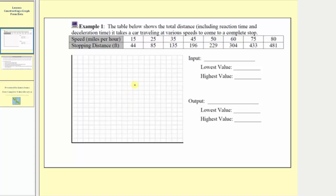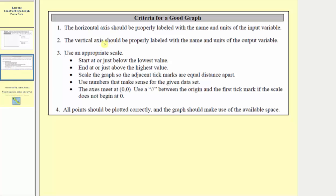Before we set up our graph, let's look at some criteria for a good graph. Number one, the horizontal axis should be properly labeled with the name and units of the input variable. Two, the vertical axis should be properly labeled with the name and units of the output variable. Step three, we want to use an appropriate scale. We want to start at or just below the lowest value and end at or just above the highest value on each axis.